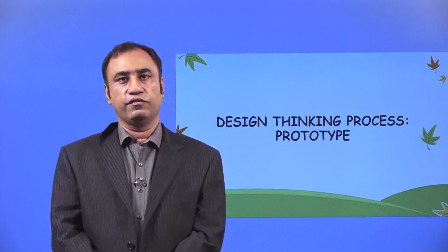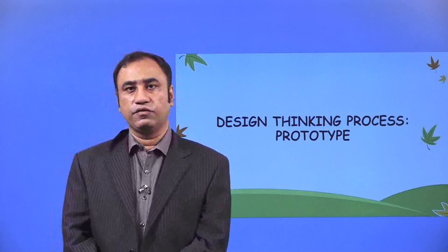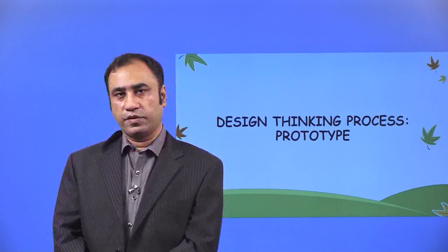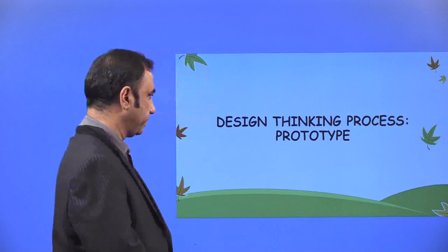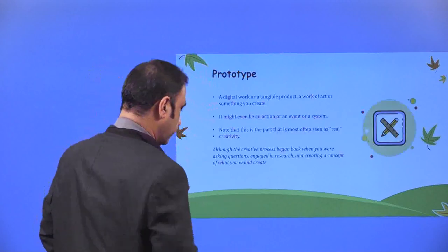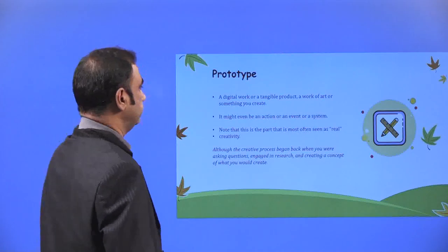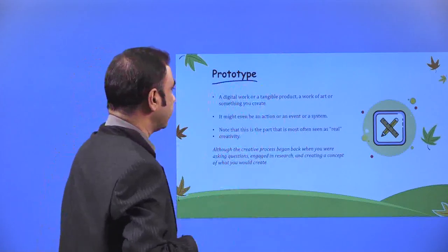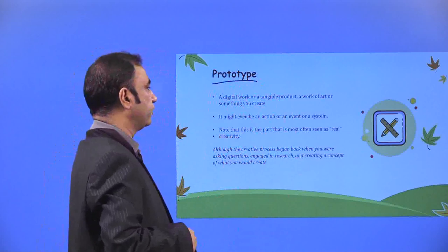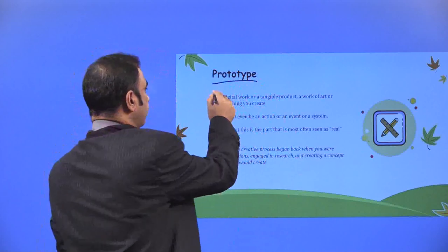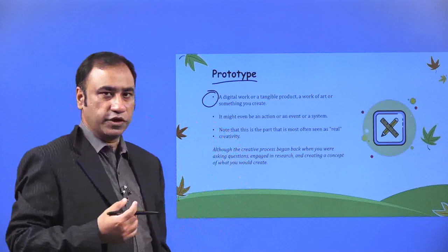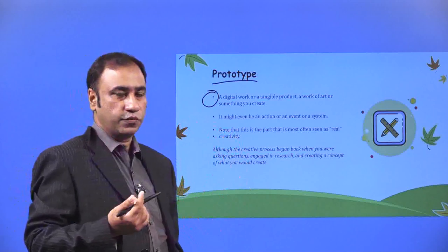Now you want to give a shape to your idea. How do you give a shape to your idea? There are different ways — that process is about prototyping. So let's get into it. Prototype: a digital work or a tangible product, a work of art or something you create. A creation which you give a particular shape is about prototype.